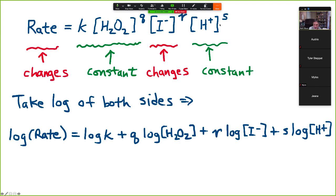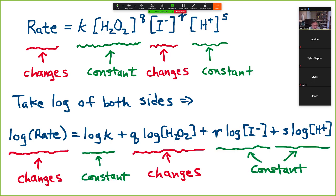And so taking the log of both sides gives you log of rate equals log of the constant K plus Q, this exponent, times the log of H2O2, plus R, the exponent for I minus, times log of I minus, and then plus S log of H plus. And then the log of the rate is going to change from one experiment or trial to another, as will the log of H2O2. But those other things, as noted before, are all constant.